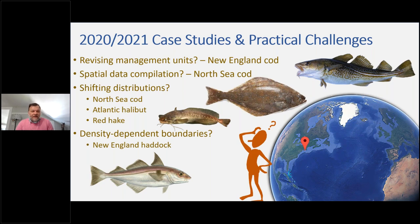For New England Cod, I'll talk about the challenges of revising management units. I'll move to Cod in the North Sea to discuss the challenges of spatial data compilation and shifting distributions, then Atlantic Halibut, Red Hake and shifting distributions, and wrap up with some tentative work on New England Haddock on whether boundaries themselves are static or time-varying — perhaps even density-dependent.